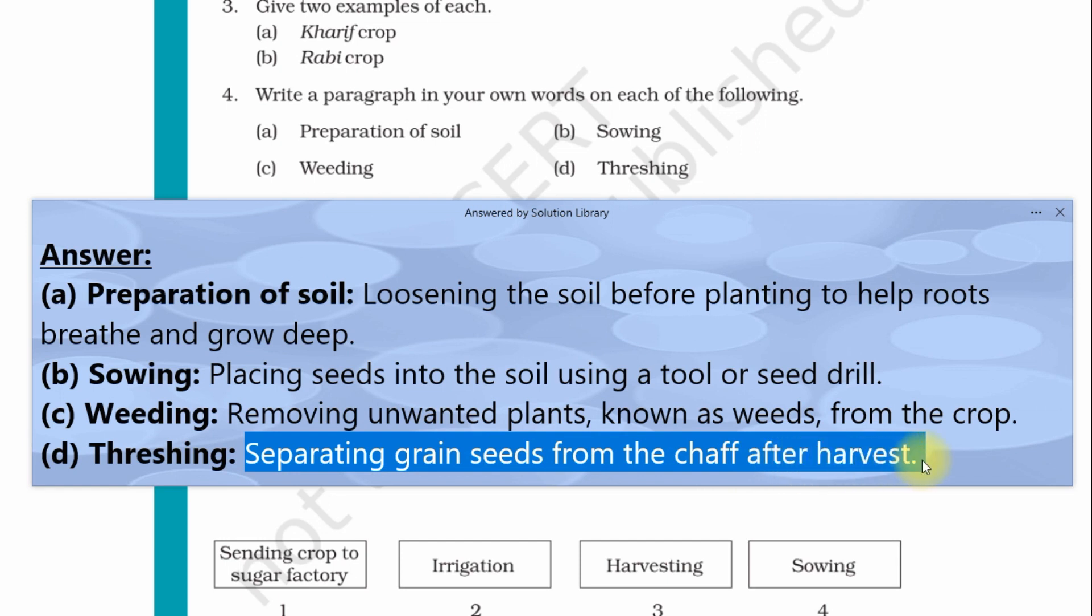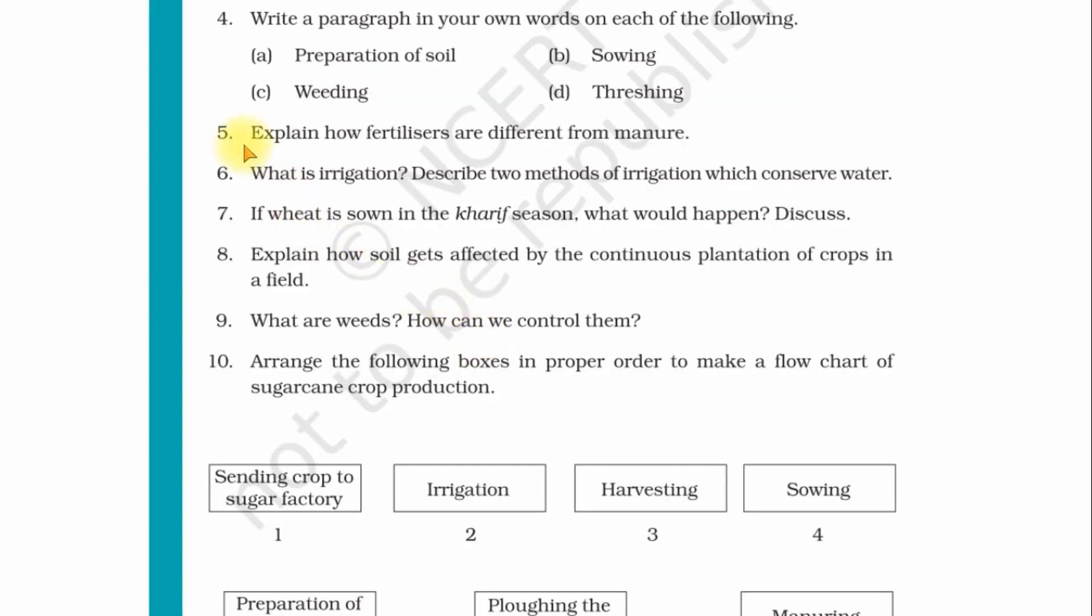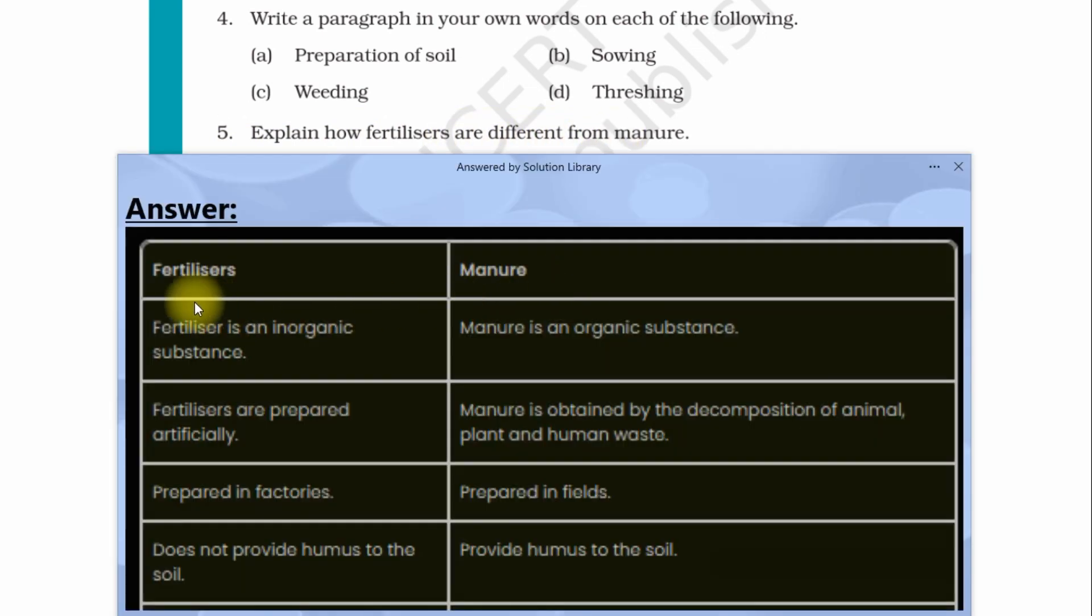Question number five: Explain how fertilizers are different from manure. Here is the answer: Fertilizer is an inorganic substance whereas manure is an organic substance. Fertilizers are prepared artificially. Manure is obtained by decomposition of animals, plant, and human waste. Fertilizers are prepared in factories whereas manure is prepared in the field. Fertilizers do not provide humus to the soil while manure provides humus to the soil.